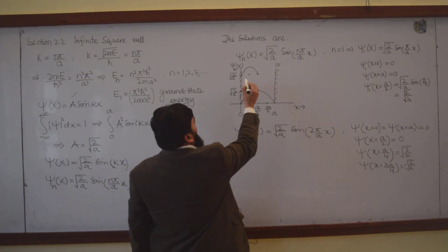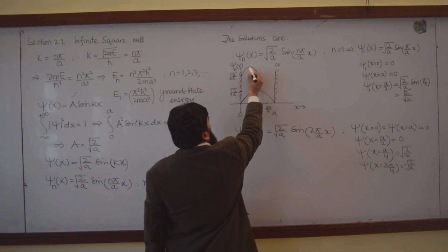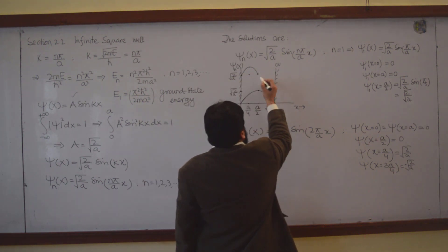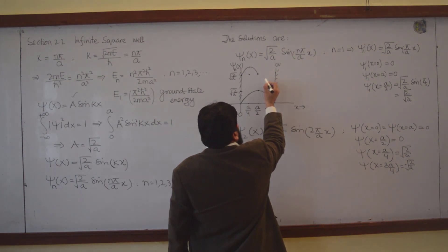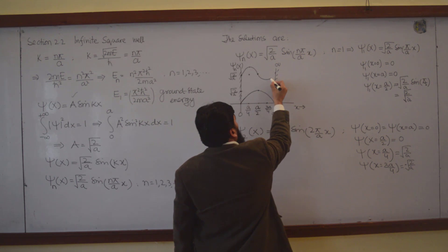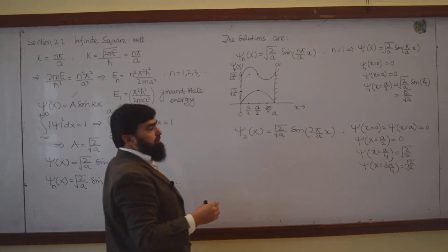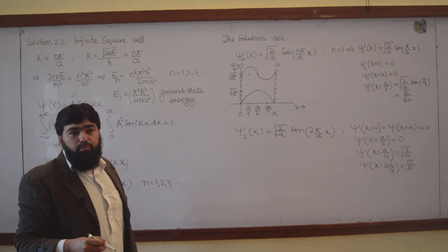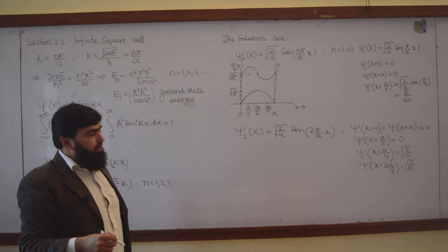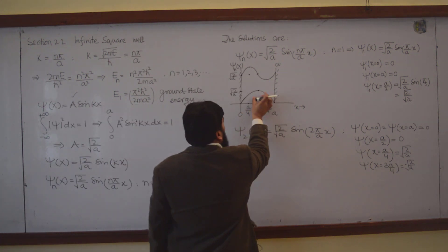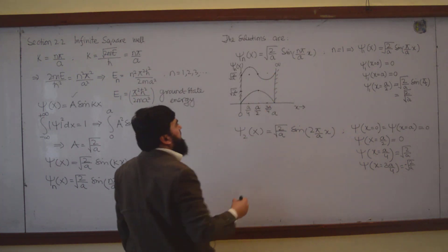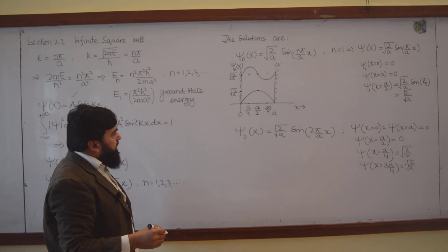At a/4 the value is maximum, which is √(2/a), and then at a/2 it is 0, and then we have the minimum of this value. It is a complete wavelength. The ψ₁ was a half wavelength, and ψ₂ is a full wavelength.